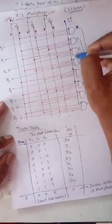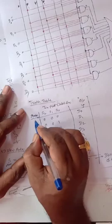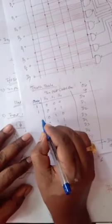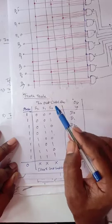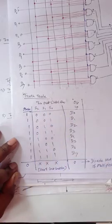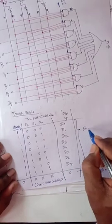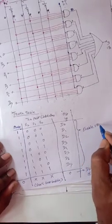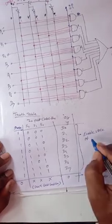If we make strobe equal to one, then one of the inputs of all AND gates becomes one, and the multiplexer works as a normal 8-to-1 multiplexer. You have to make strobe equal to one for the multiplexer to work normally. This is known as the enable state of the multiplexer.